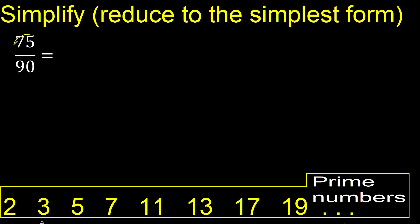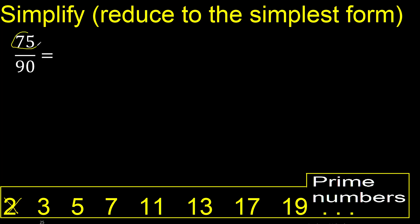Can 75 and 90 be divided by the same number? Cannot be divided by 2 because 75 cannot be divided by 2 — the last digit is not even.